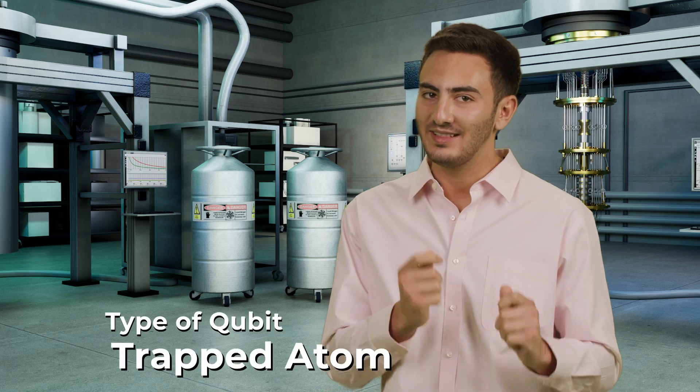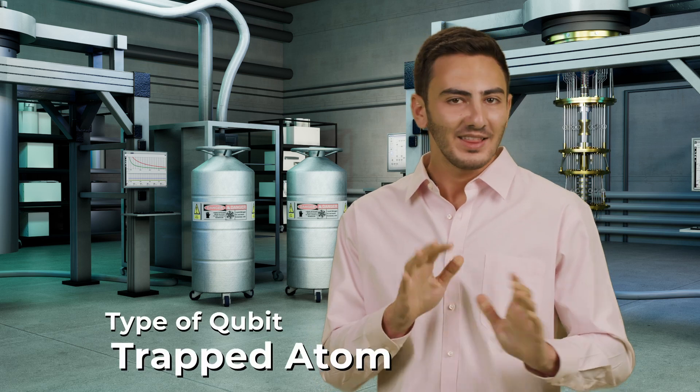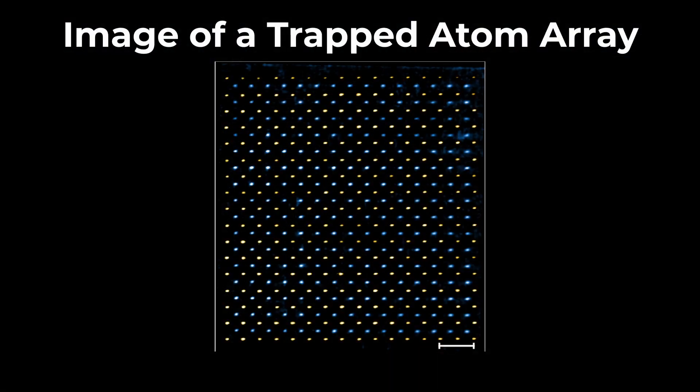Single atoms and molecules can be trapped and manipulated using lasers. They're easy to isolate from their environment, but the more atoms you isolate, the more lasers you need and the harder it gets. The two states used as zero and one are usually the spin of the electron or the nucleus.